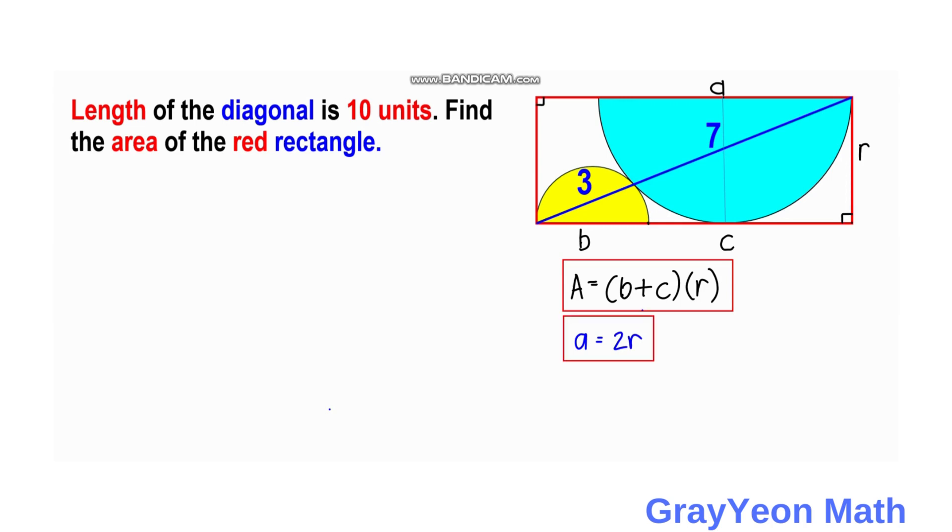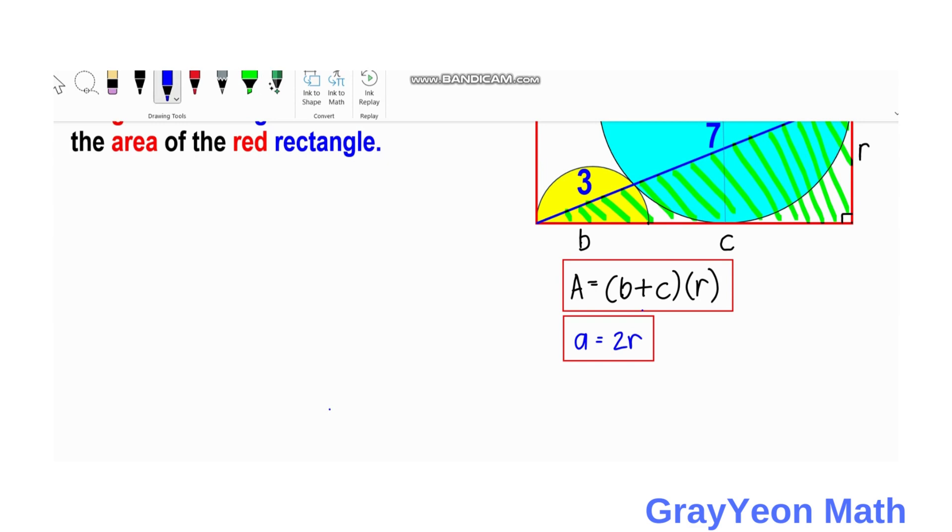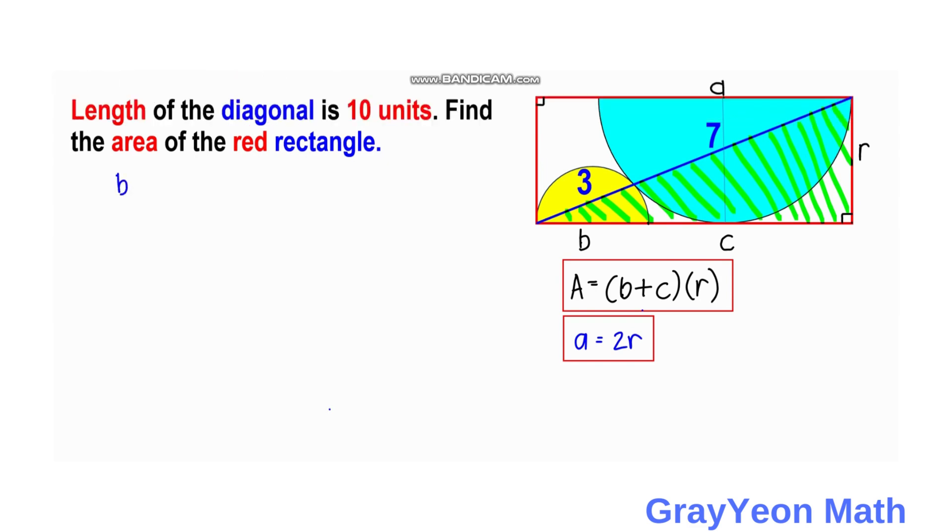So next we focus on this triangle, this shaded triangle that we want to focus on. This is the biggest triangle inside this rectangle. It is formed by the sides of the rectangle, the length and the width, and the diagonal inside. So if we get the ratio of this longer length over this hypotenuse, we have B plus C all over 10.